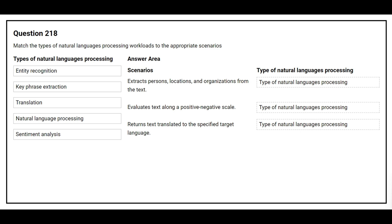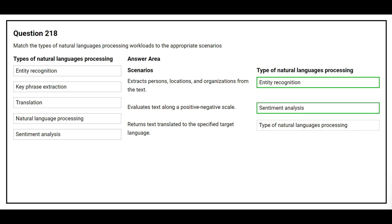Question number 218. Match the type of natural language processing workload to the appropriate scenarios. The first scenario is: extract person, location, and organization from the text — the correct answer is Entity recognition. The second scenario is: evaluate text along a positive-negative scale — the correct answer is Sentiment analysis. The third scenario is: returns text translated to the specified target language — the correct answer is Translation.